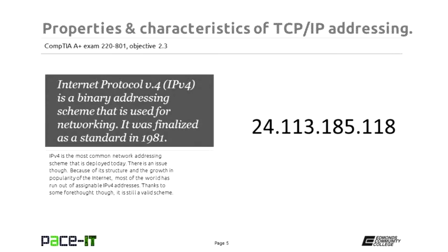So where do we start? We start with Internet Protocol Version 4, or IPv4. It is a binary addressing scheme that's used for networking and it was finalized in 1981. IPv4 is the most common network addressing scheme that is deployed today, probably not for much longer. There is an issue with IPv4 — because of its structure and the growth and popularity of the Internet, most of the world has run out of assignable IPv4 addresses.